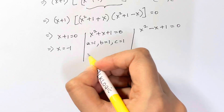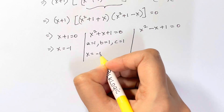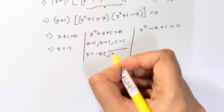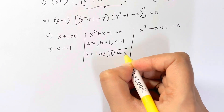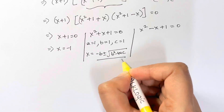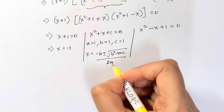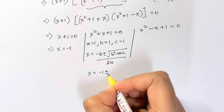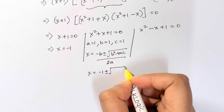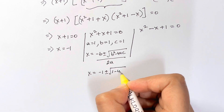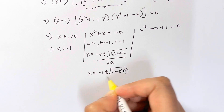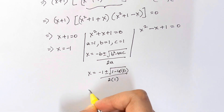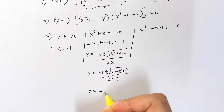Using the quadratic formula x = (-b ± √(b²-4ac)) / 2a with a=1, b=1, c=1, we substitute: x = (-1 ± √(1 - 4·1·1)) / (2·1).